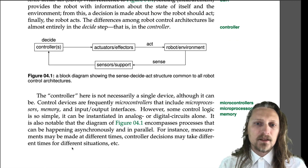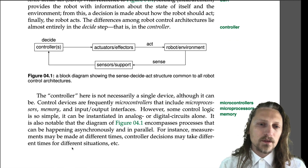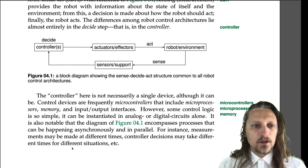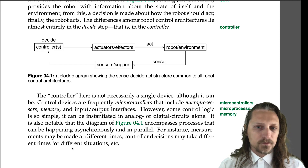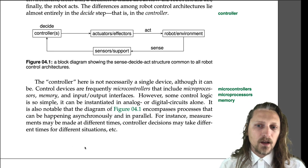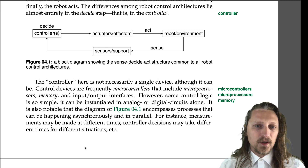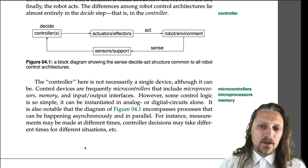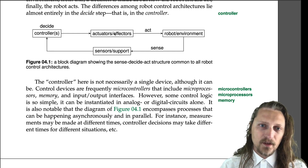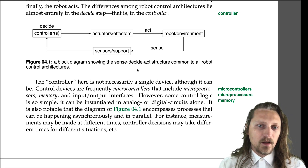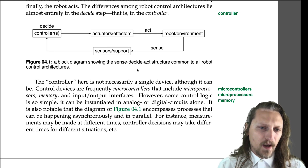The controller is not necessarily a single device, although it can be. Control devices are frequently microcontrollers that include microprocessors, memory, and input-output interfaces. However, some control logic is so simple it can be instantiated in analog or digital circuits alone. It is also notable that the diagram of Figure 4.1 encompasses processes that can be happening asynchronously and in parallel. For instance, measurements may be made at different times, controller decisions may take different times for different situations. These are the pathways followed, and certain signals might be moving along them asynchronously from others — in fact, almost always that would be the case.